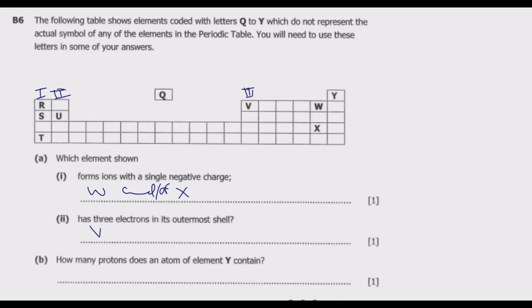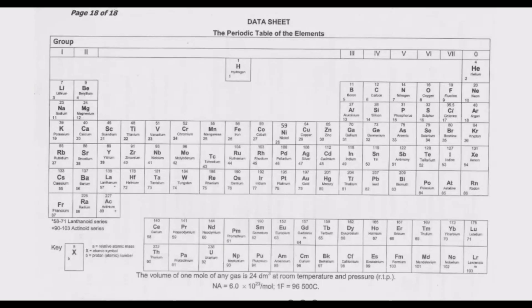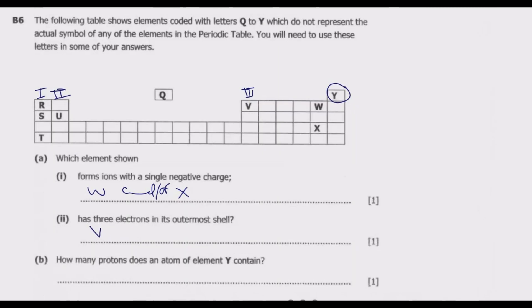Then part B: How many protons does an atom of element Y contain? So element Y, basically what you can do is go to the periodic table. We'll see what Y is. You notice that Y is helium. So helium has got a proton number of 2. So if you go back there and see, you'll notice it has two protons.